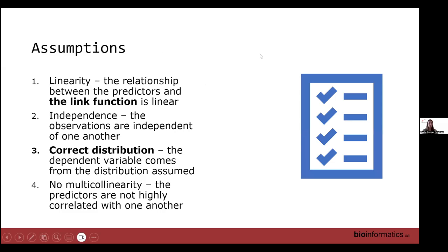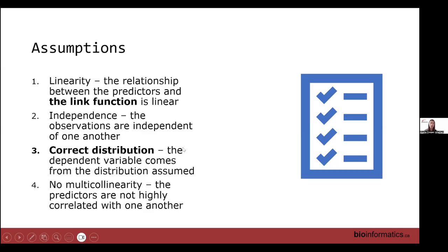Going over the GLM assumptions: GLMs don't have nearly as many assumptions as the normal linear model. We do still assume linearity, but just between the predictors and the link function — for a Poisson model, we expect a linear relationship between predictors and the log of the count, not the count itself. We still assume independence, we assume we accurately describe the distribution of our data (e.g., for Poisson: discrete counts with mean equal to variance), and we retain the no multicollinearity assumption.